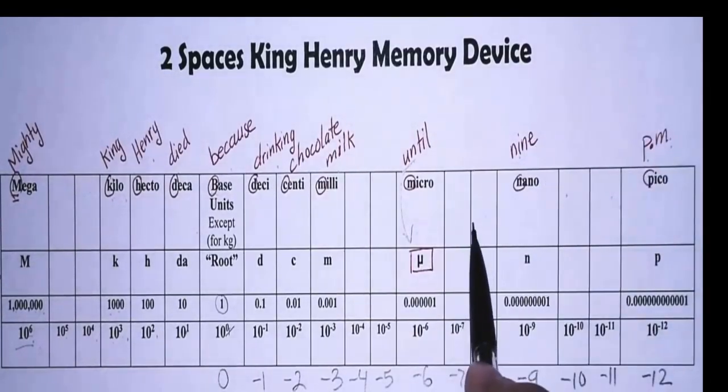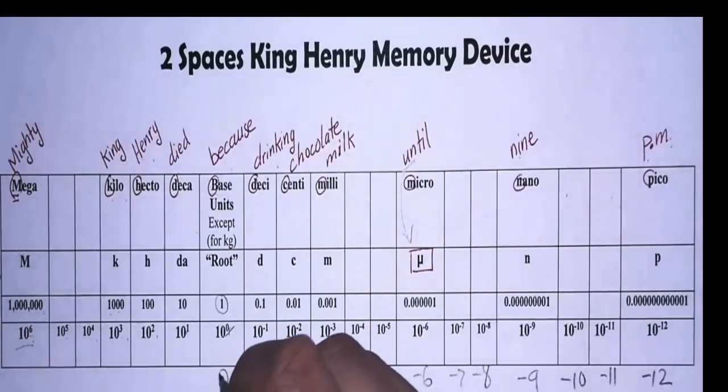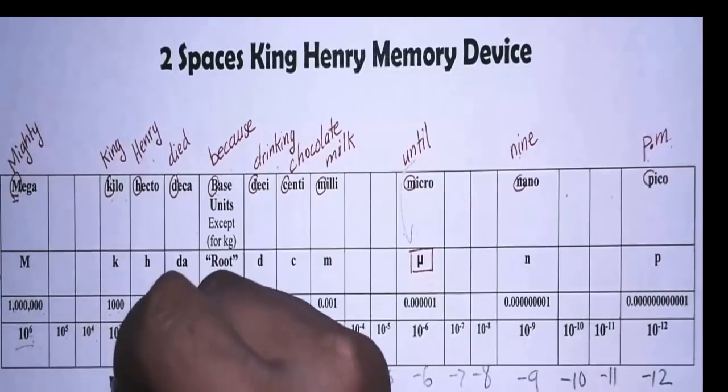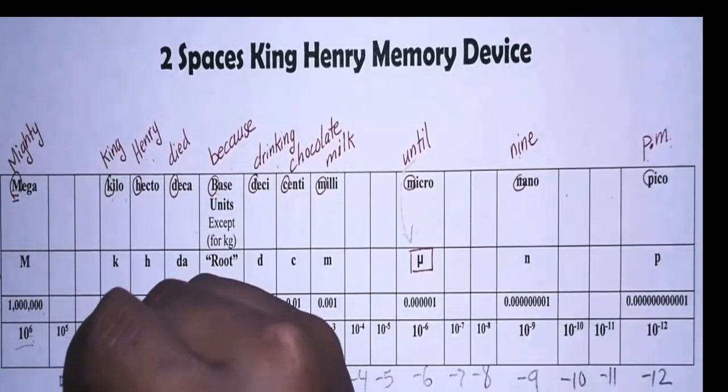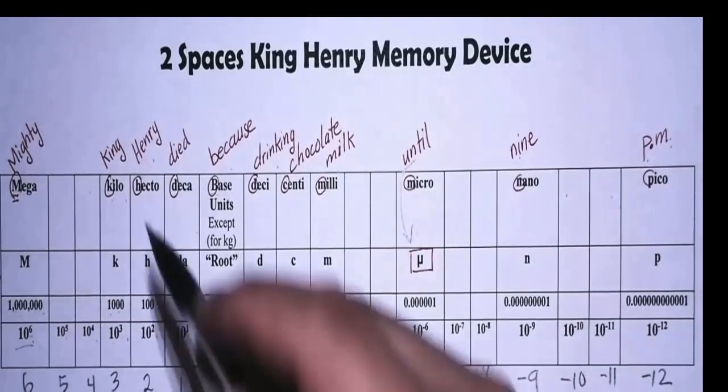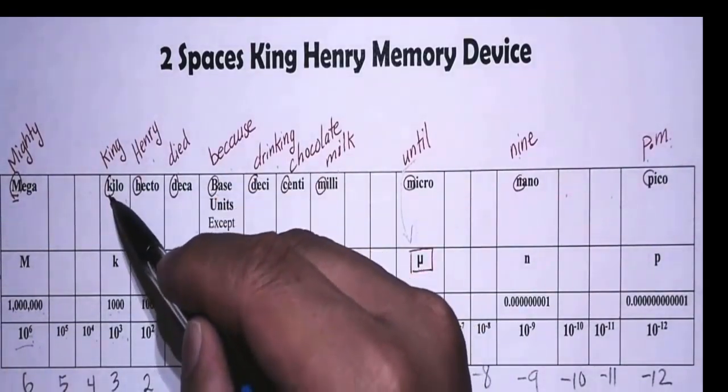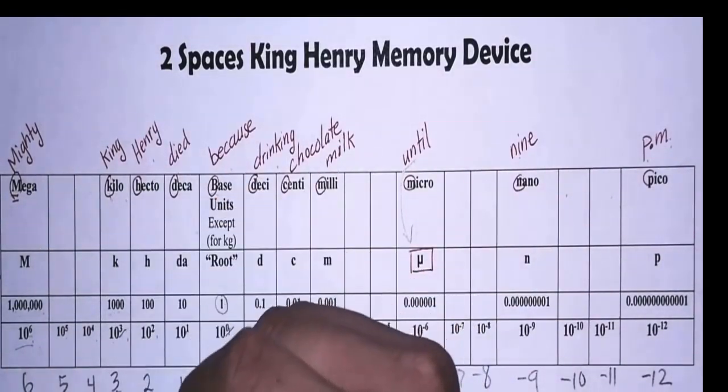That's why the two space is so important, because it allows you to have that decrease of one continuously. Or if you go this way to determine mega, what's after zero? One, two, three, four, five, six. As you can see, let's test it out. We have kilo, which is ten to the third. And there you go.